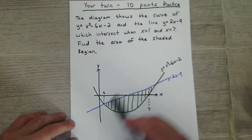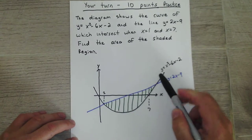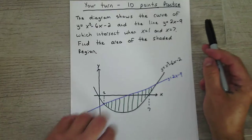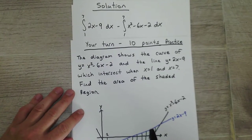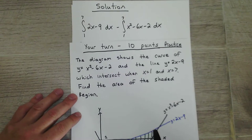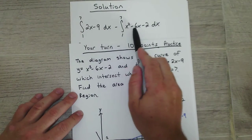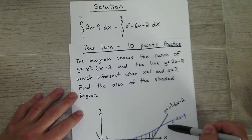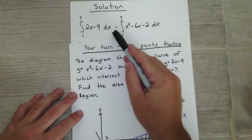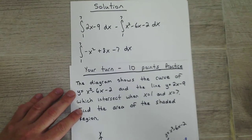So what you should have done was the integration of the line minus the integration of the curve. Evaluate it at 1 to 7. So you should set up like that. Distribute this negative. That's why it's important to set it up this way. The top minus the bottom. So that this negative distributes. Otherwise you'll get some wrong numbers. So it simplifies to that.